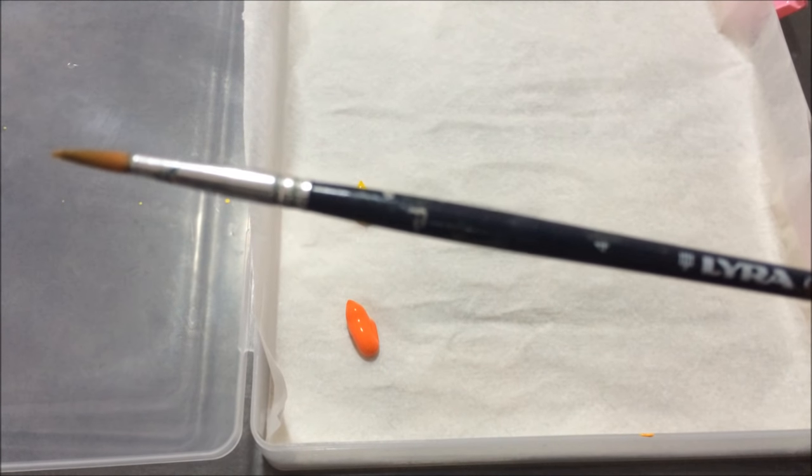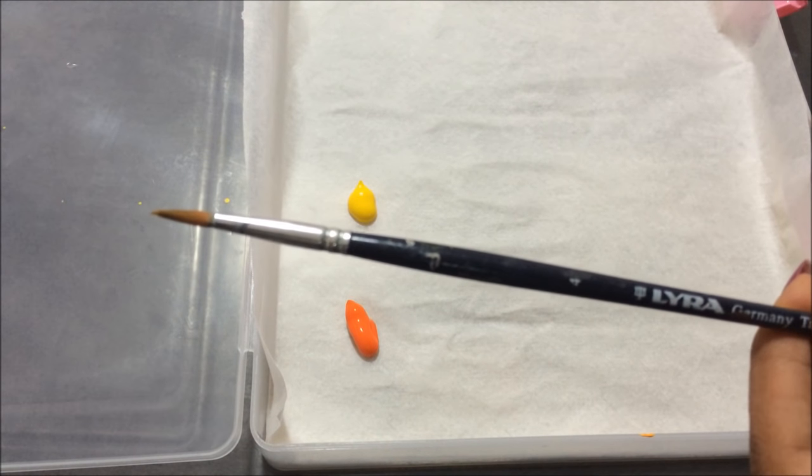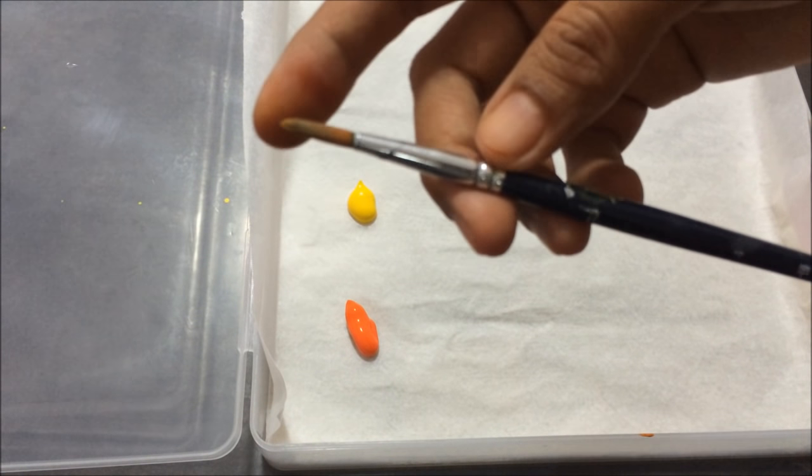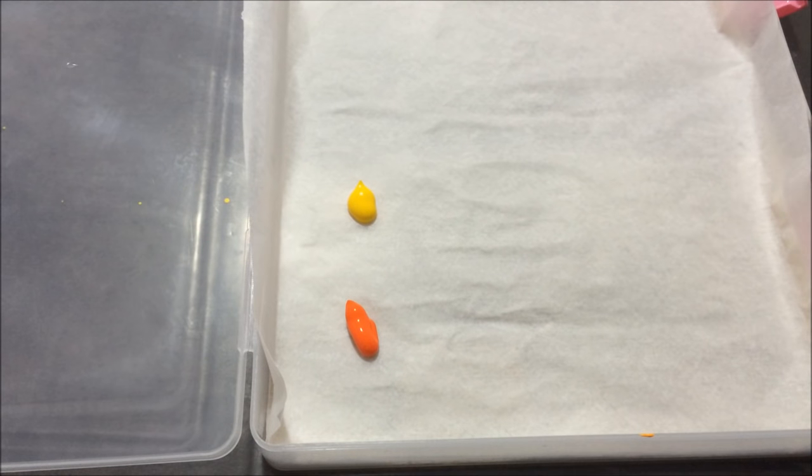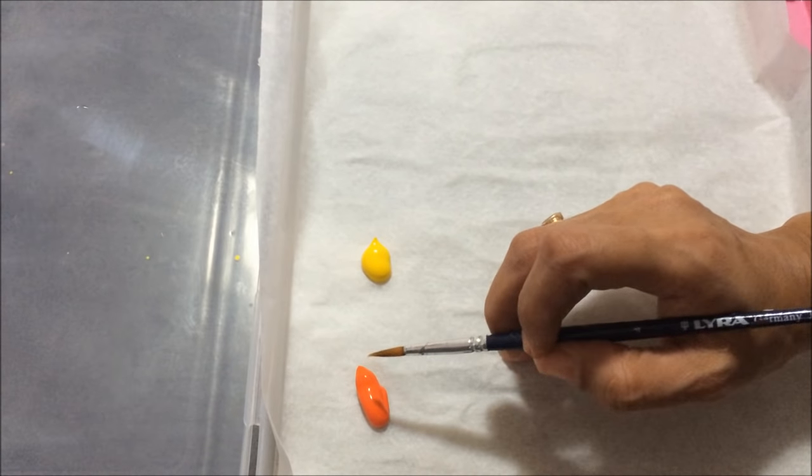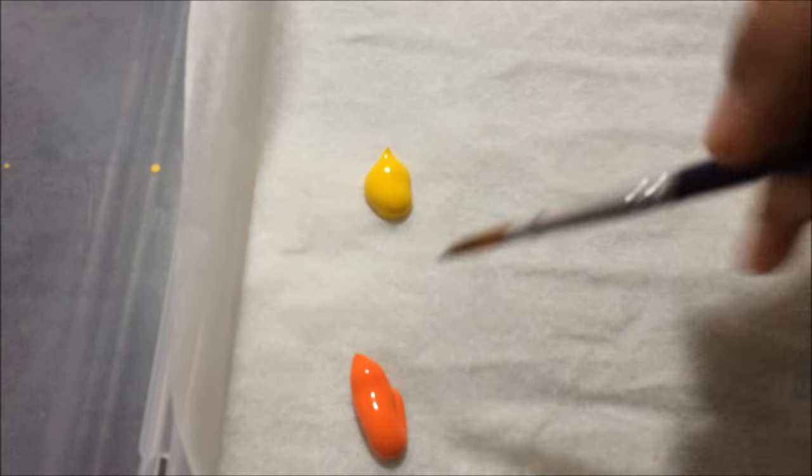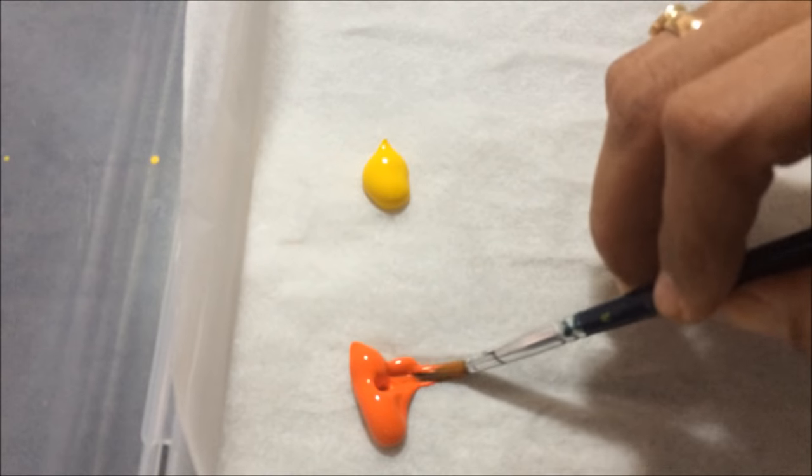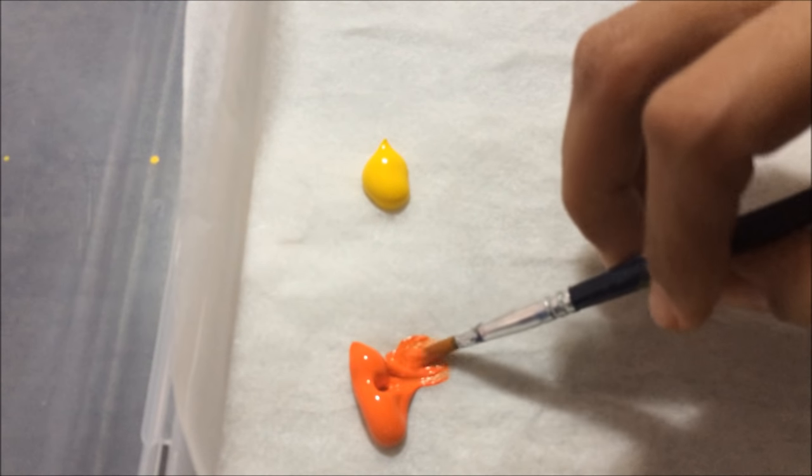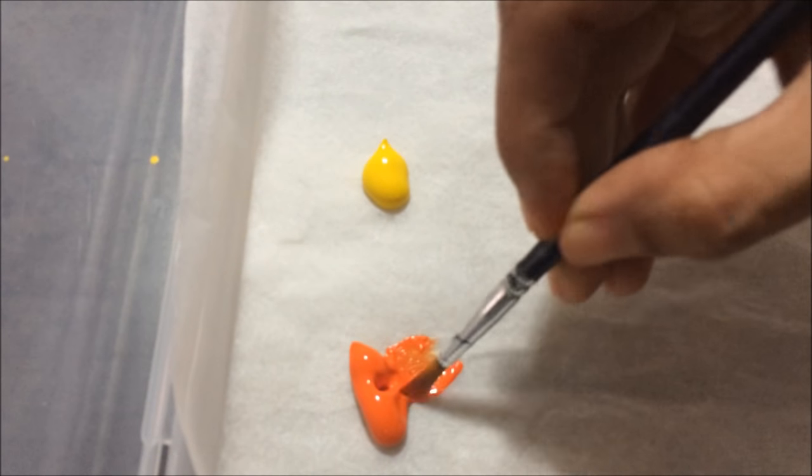But before that, how to load brush is very important for any type of painting. For that, first of all, damp wet the brush and wipe it off with kitchen towel. Then we will use two colors - one loading color and another tipping color.